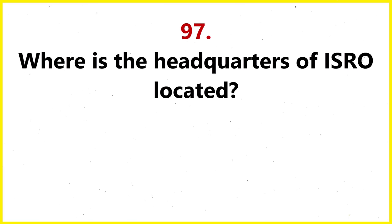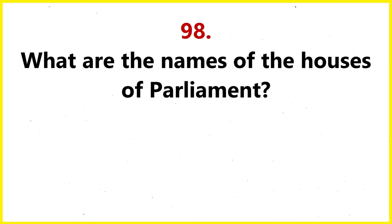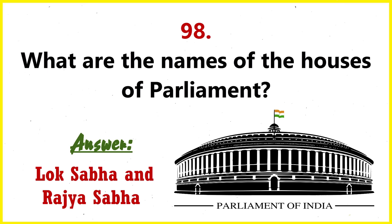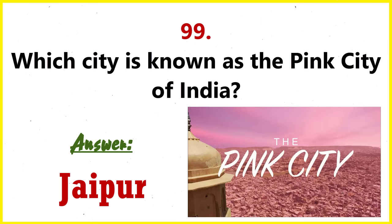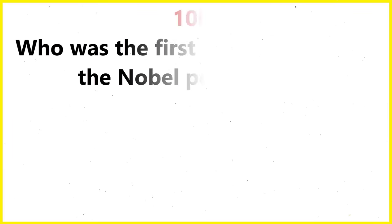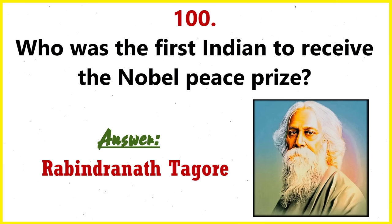Where is the headquarters of ISRO located? Bangalore. What are the names of the houses of Parliament? The Lok Sabha and Rajya Sabha. Which city is known as the Pink City of India? Jaipur. Who was the first Indian to receive the Nobel Peace Prize? Rabindranath Tagore.